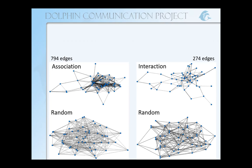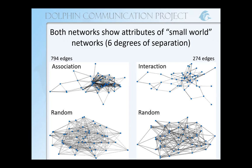By comparing to random networks and other types of networks, we can learn features of our networks. I found that both networks show attributes of what we call small world networks. In this type of network, the average distance — the number of nodes you have to pass through to connect to individuals — is going to be similar to the random network, but they're going to have a higher clustering coefficient. That's where we see these little clusters of more similar dolphins in both networks, and that's one of the features that sets it apart from random.